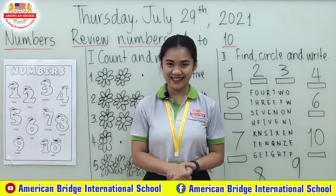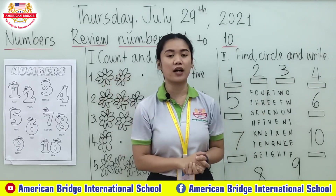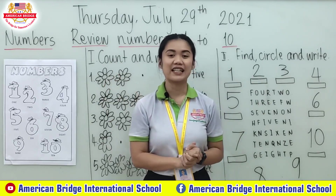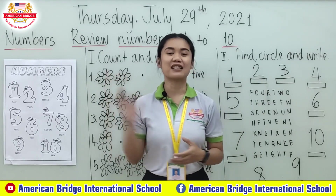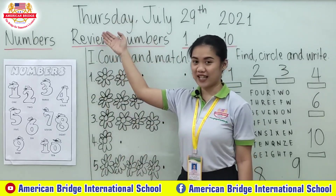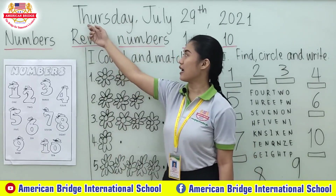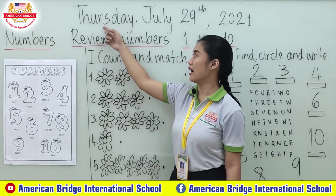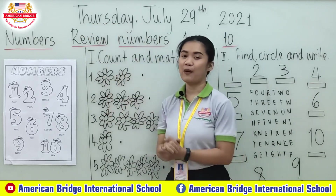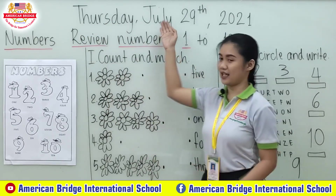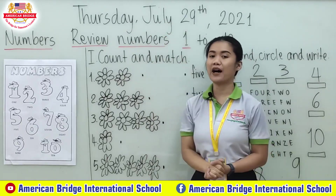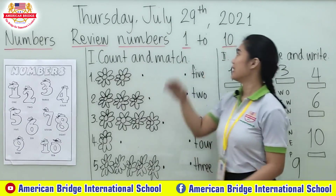So everyone, are you ready to do the activities for our review lesson today? Let's begin. What day is today? Today is Thursday, correct. Now let's read and spell the day and the date all together. Thursday — T-H-U-R-S-D-A-Y. How about the month? July — J-U-L-Y.